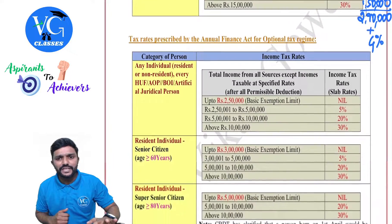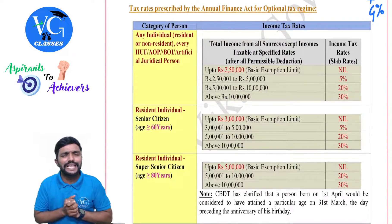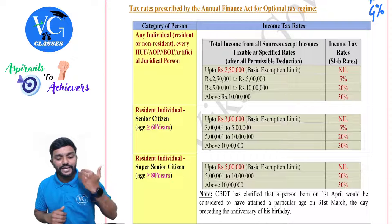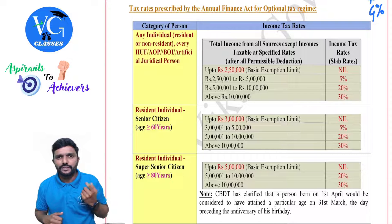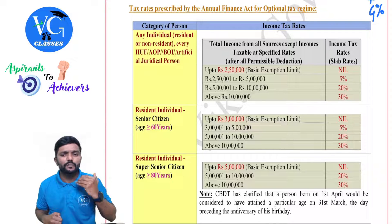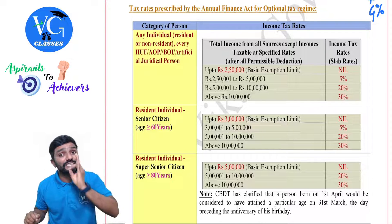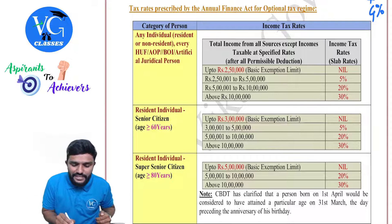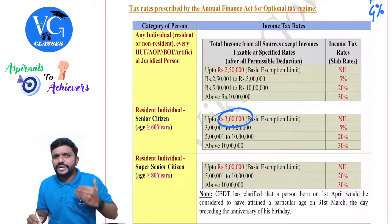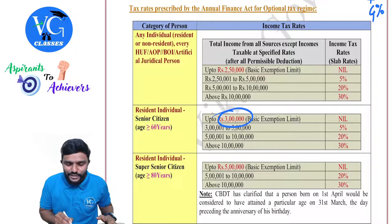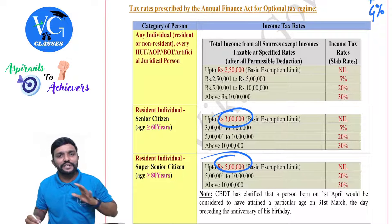What about the optional regime — is there any change? No. Under the optional regime, the slab rates remain the same. It is applicable for individual, HUF, AOP, BOI, and artificial juridical person. The basic exemption limit is up to 2 lakh 50, and the tax rate is nil. Then 2 lakh 50 to 5 lakh is 5%. From 5 lakh to 10 lakh, it is 20%. More than 10 lakh, it is 30%. But only for the resident individual who is aged 60 or more but less than 80, they get a higher basic exemption limit of 3 lakh. If the resident individual is aged 80 or more — whom we call a super senior citizen — the basic exemption limit would be 5 lakh. Rest all remains the same.